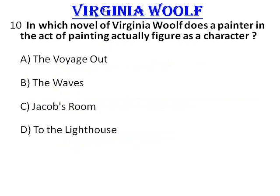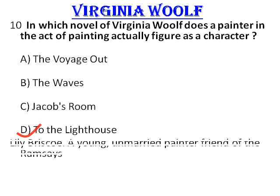In which novel of Virginia Woolf does a painter in the act of painting actually figure as a character — The Voyage Out, The Waves, Jacob's Room, or To the Lighthouse? The correct answer is To the Lighthouse. The character is Lily Briscoe, a young unmarried painter and friend of the Ramsays.